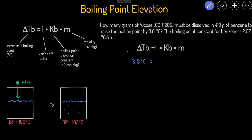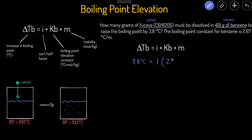For the Van't Hoff factor i: fructose is our solute and benzene is our solvent. Fructose is a molecular compound (contains non-metals only), so it does not break up into multiple species when it dissolves — it stays intact. That means the i value for fructose is 1. Kb, the boiling point elevation constant for benzene, is 2.67 degrees Celsius per molal.